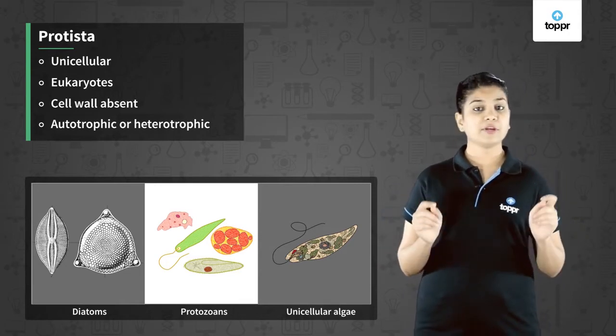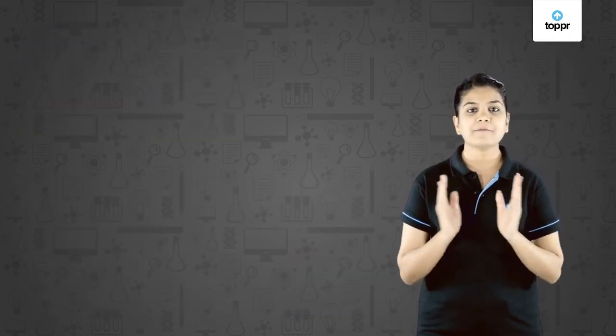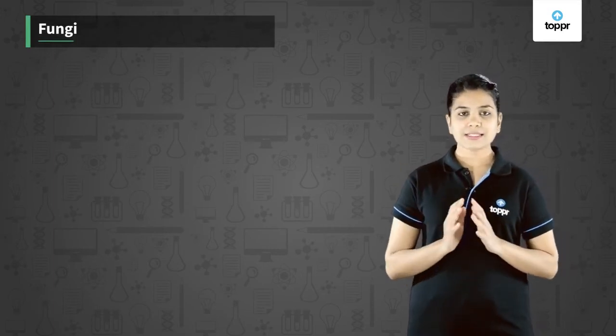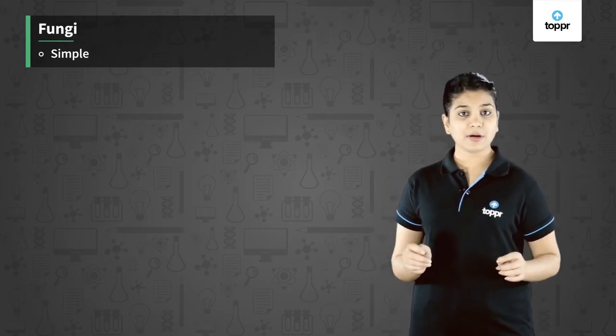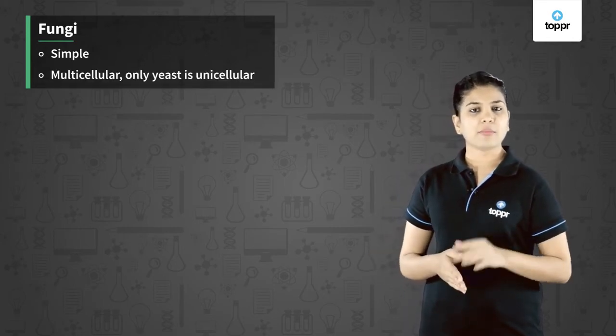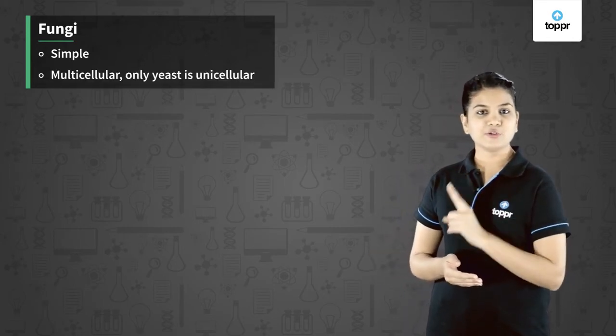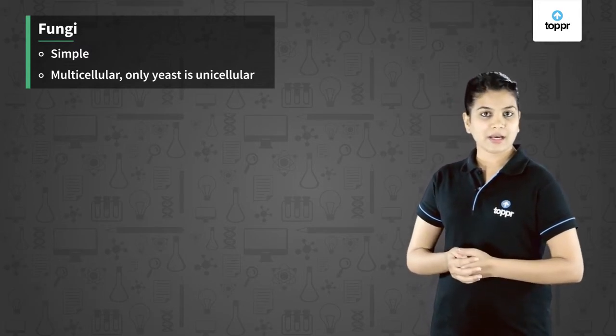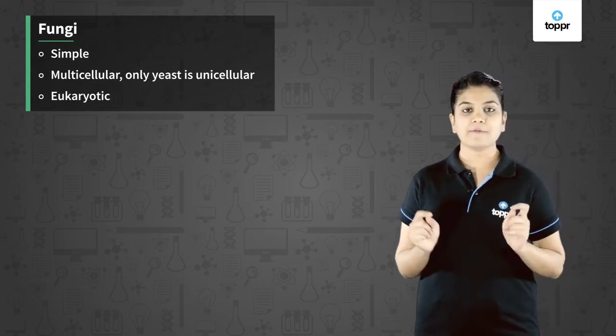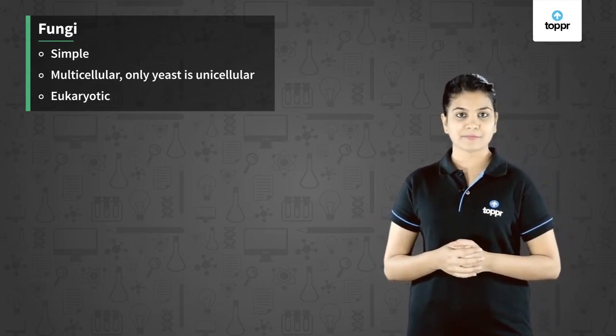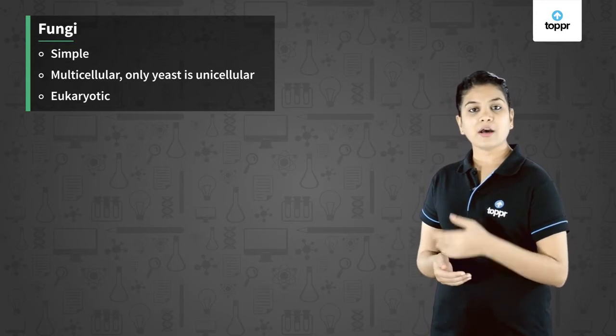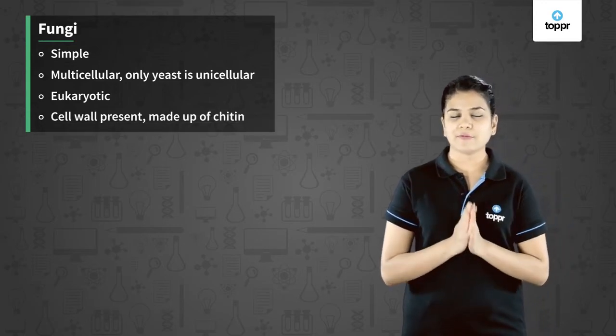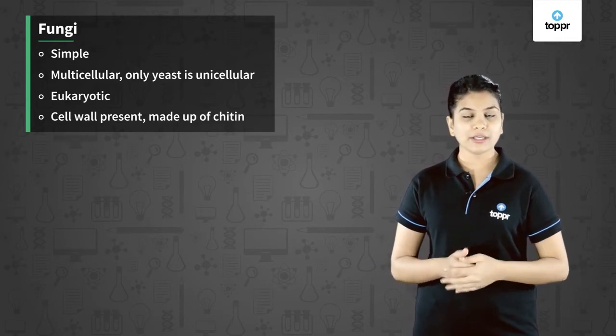The next kingdom is Fungi. Fungi are simple organisms, mostly multicellular, but yeast is a unicellular fungi. Fungi are eukaryotes as they possess a well-defined nucleus. They also have a proper cell wall, but this cell wall is made up of a complex sugar called chitin.